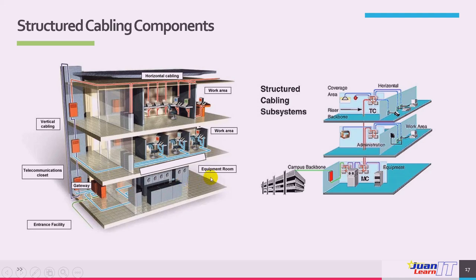Work areas are individually cabled to equipment in the telecommunication closet. Each workstation is directly connected to the telecommunication closet via horizontal cabling. The TIA standard defines parameters for each part of the cabling system, including the work area, horizontal wiring, telecommunication closets, equipment rooms and cross-connects, backbone or vertical wiring, and entrance facilities.